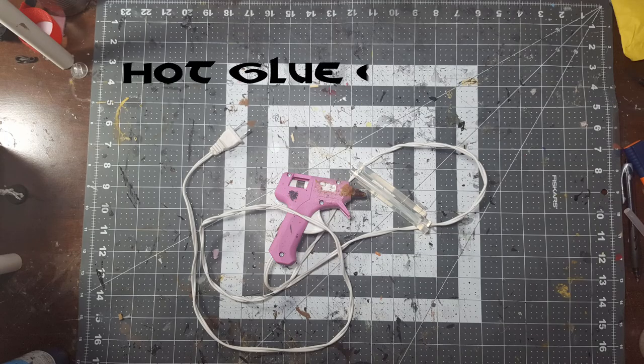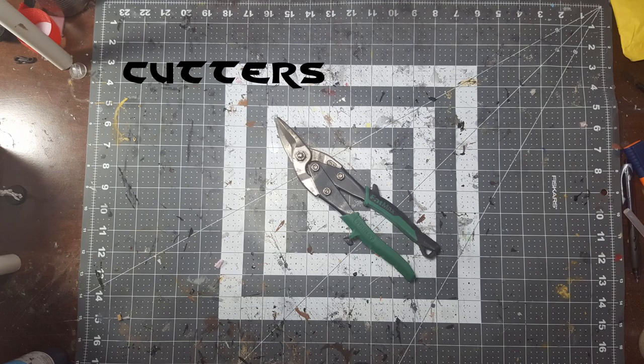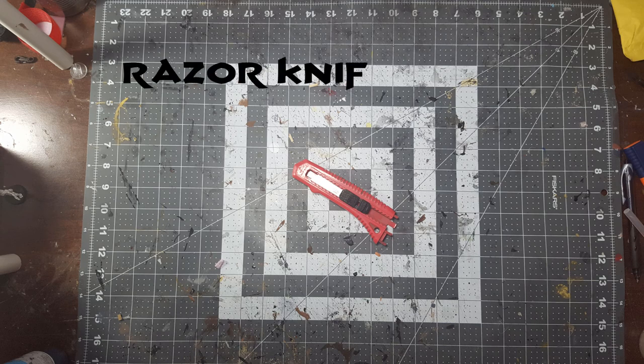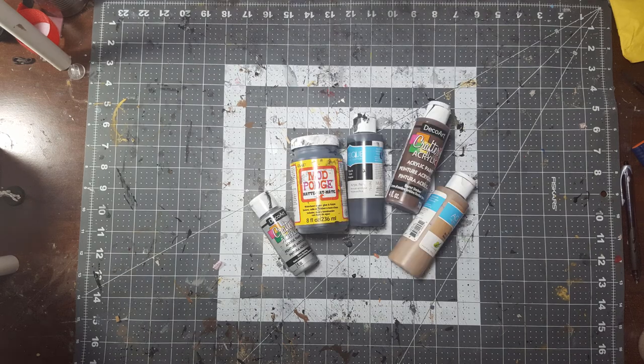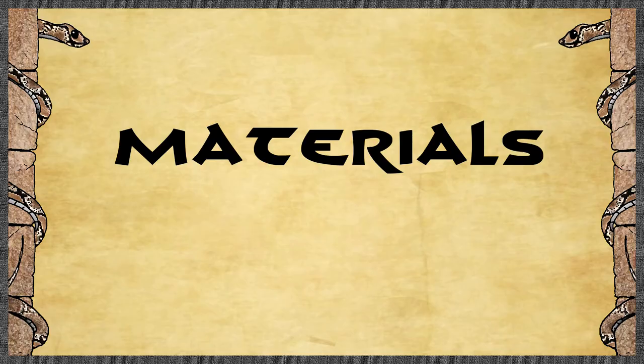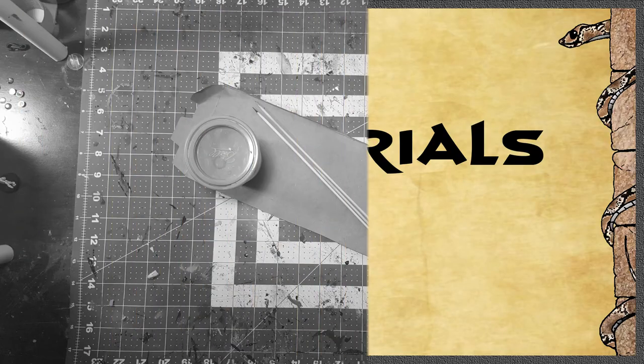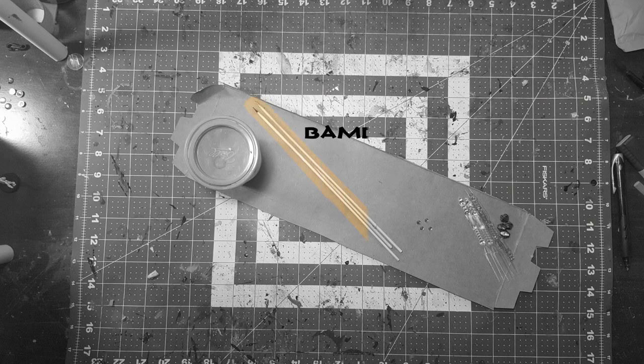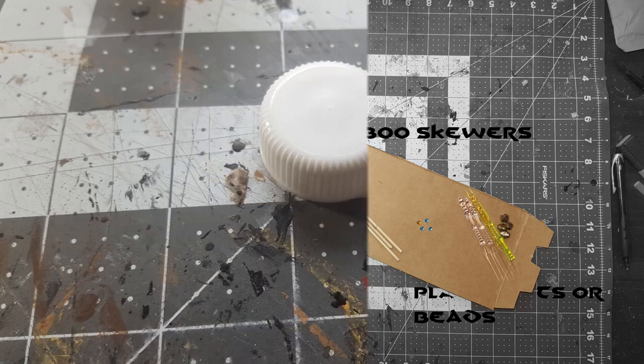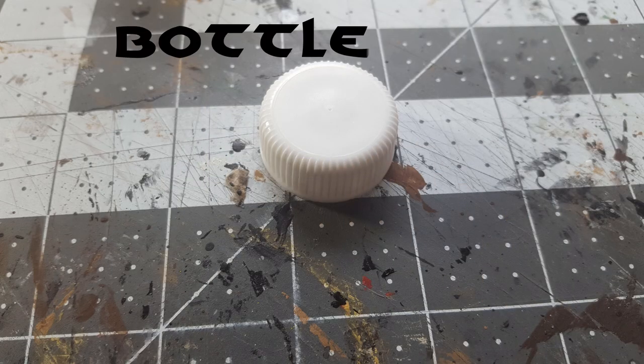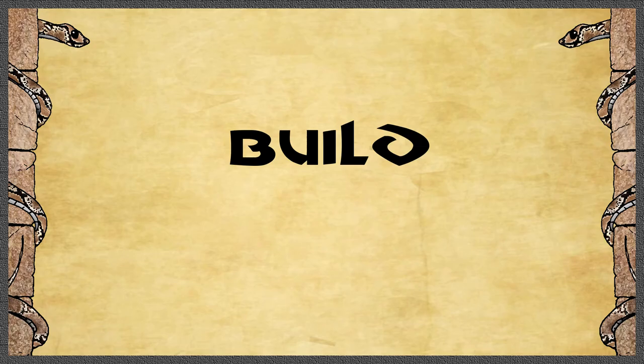So first thing we need is a hot glue gun, of course, some cutters, a razor knife, steel ruler, paintbrushes, various paints and mod podge. Materials: we're going to need some bamboo skewers, some plastic forks, beads, small gems, some sand, and thin cardstock from like a cereal box, and a bottle cap. So let's get on with the build.